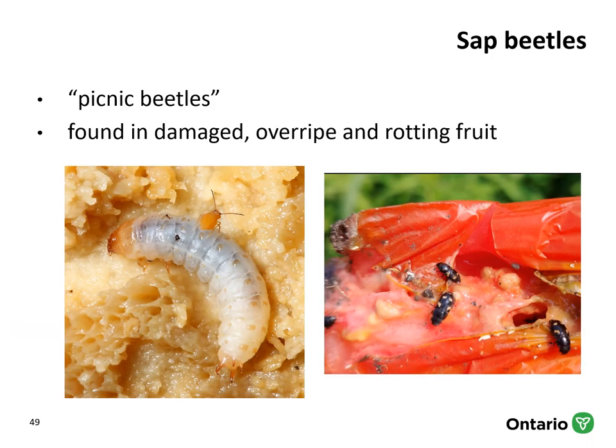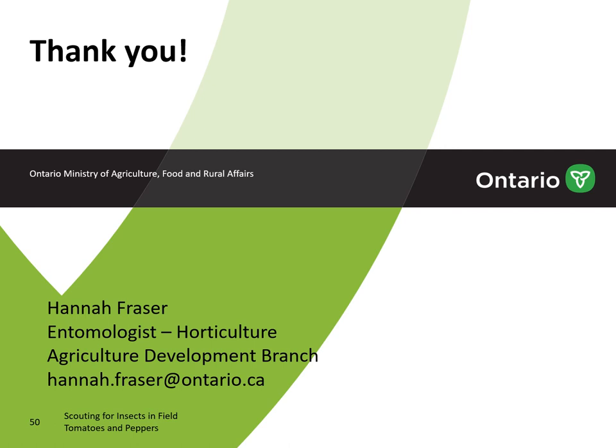The last insect I wanted to cover, very briefly and more for recognition purposes, are sap beetles, sometimes referred to as picnic beetles. These are found in damaged, overripe, and rotting fruit — usually when you see them there's another problem occurring on the crop, and you'll often find them in fruit that has already dropped. With this, I'm going to end my presentation. Thank you for attending. If you have any questions, please feel free to contact me at the email below.